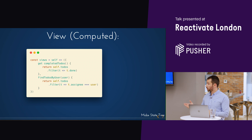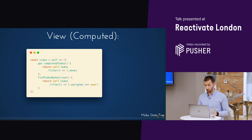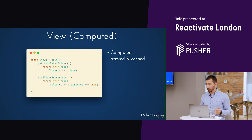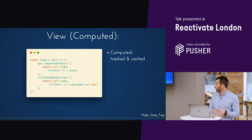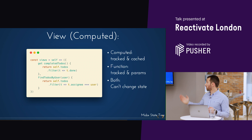We also have views, implemented in the state tree, which give us options to derive values. There are two ways: one using the JavaScript getter, and the other as a normal function. These are slightly different — the getter is like a computed value, so whatever value is retrieved will be tracked and cached. For functions with params, it won't be cached. For both, you cannot use them to change the state — you have to use actions.